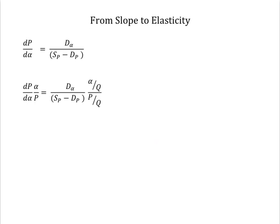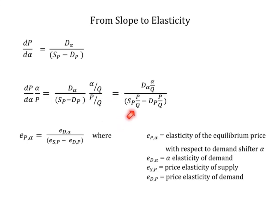To transform the slope to an elasticity for a demand shifter, multiply both sides of the equality by alpha over P, and then divide the right-hand side numerator and denominator by Q, both steps leaving the equality unchanged. Distributing these ratios yields this expression.